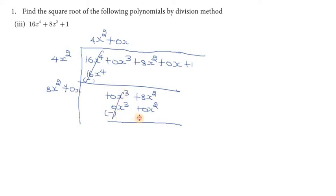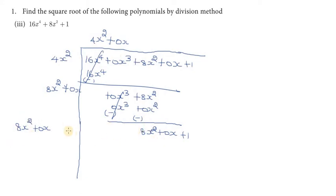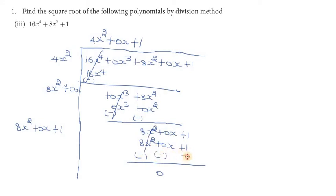Sign change, cancel. We bring down 8x square plus 0x. Adding gives 8x square. Multiplying: plus 1 times 8x square gives 8x square, and 0x plus 1 remains. We cancel and get remainder 0. So 16x power 4 plus 8x square plus 1 equals the square of 4x square plus 0x plus 1, giving the answer 4x square plus 1.